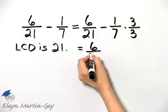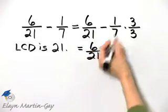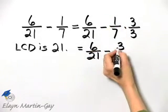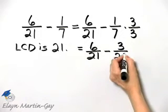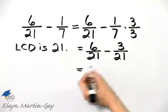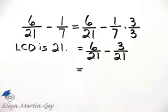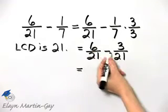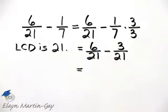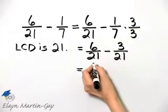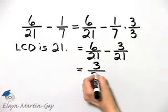So I have six over 21 minus one times three is three, seven times three is 21. Now I'm subtracting and the denominators are the same so I have the right to combine numerators. Six minus three is three over 21.